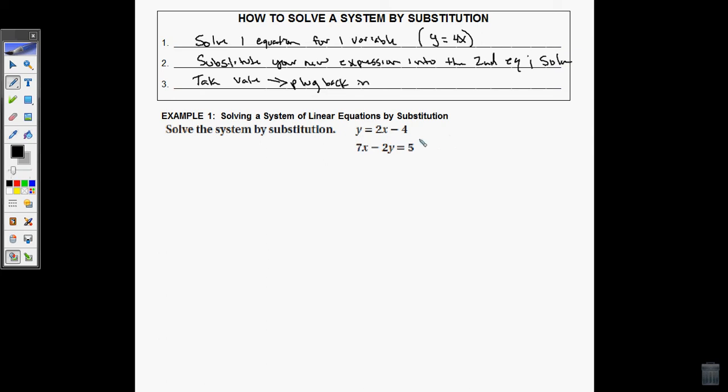y equals 2x minus 4 and 7x minus 2y equals 5. So one here is written in slope intercept form and the other here is written in standard form. Now, what's interesting here is when I go to solve this by substitution, my first step says solve one equation for one single variable. And it just so happens that this equation already looks like that. So I don't even need to solve it. It already says y equals 2x minus 4.